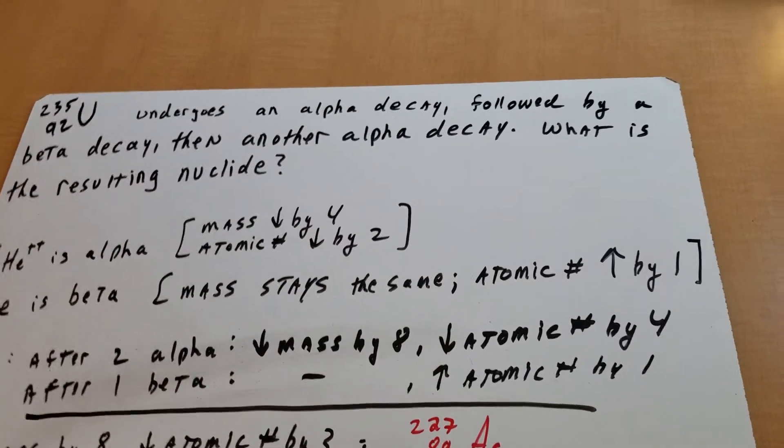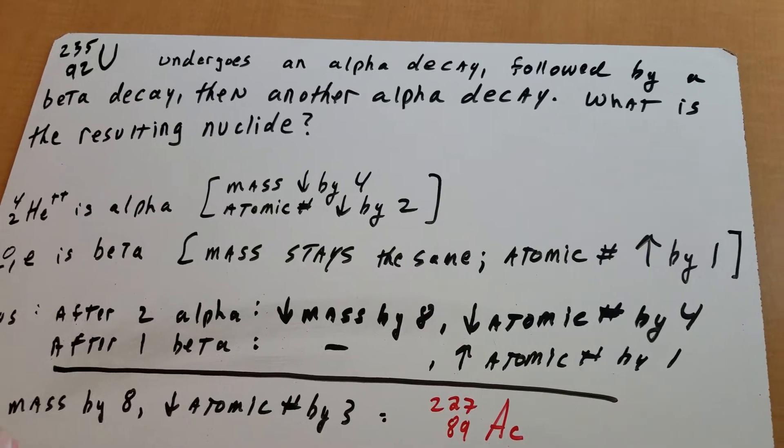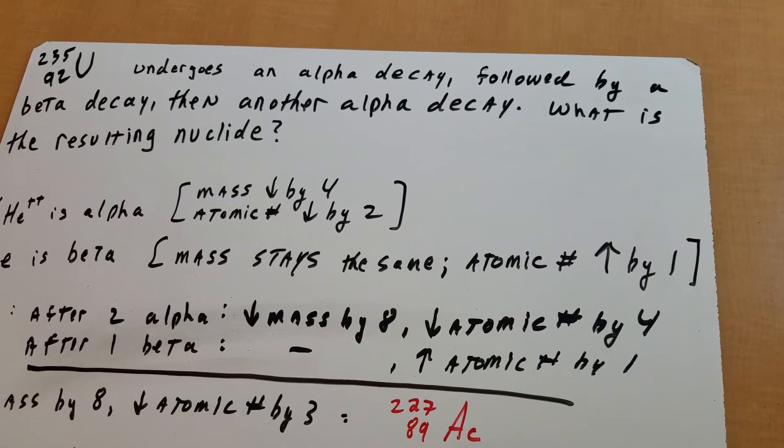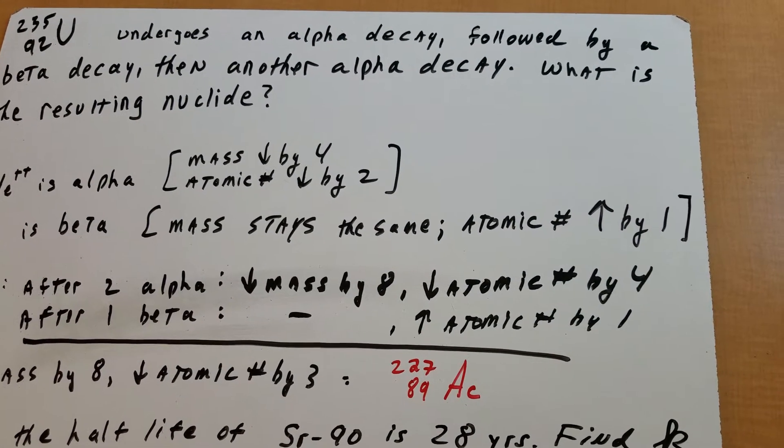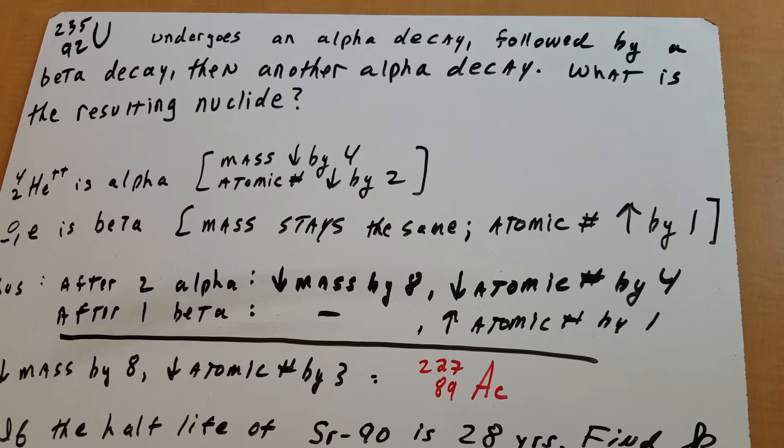What we're going to do is we're going to take a look at uranium-235. I gave you the mass, and I gave you the atomic number, and I say to you, it undergoes an alpha decay, followed by a beta decay, then another alpha decay. And I want you to tell me what the resulting nuclide would be.